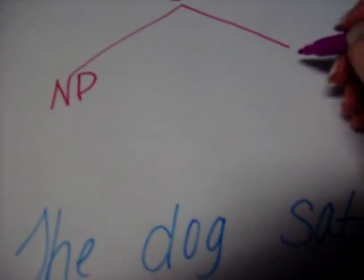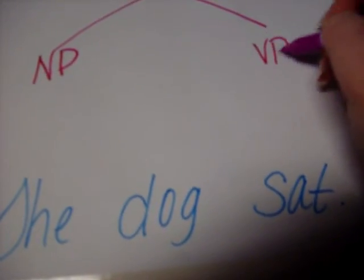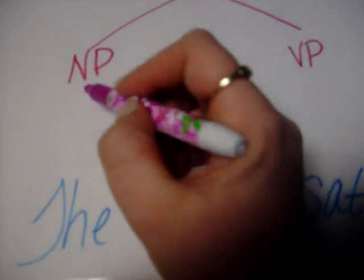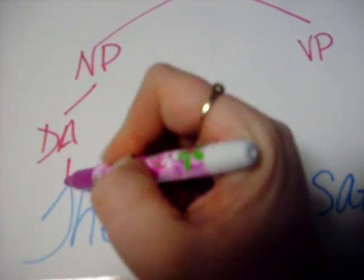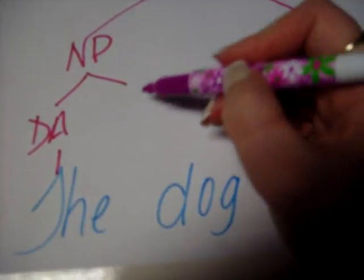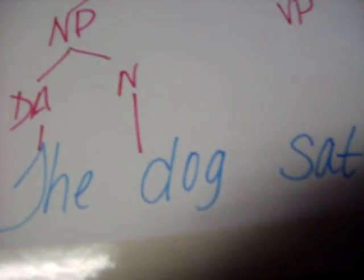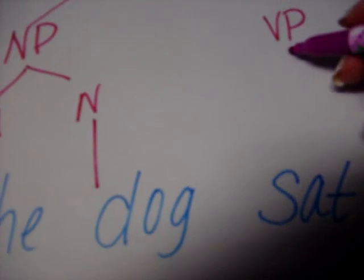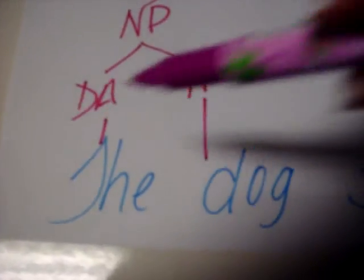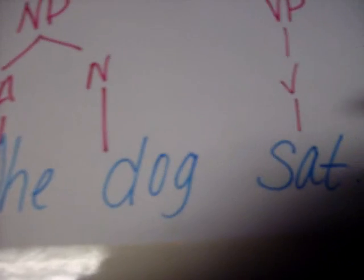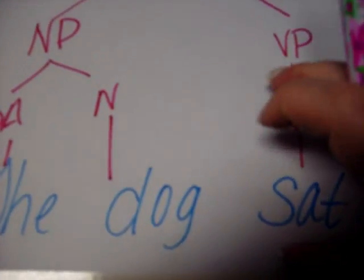We have the two parts: the noun phrase and the verb phrase. In the noun phrase, we have our definite article 'the' and we have our central noun 'dog.' In our verb phrase, we only have the verb 'sat.' So, the dog sat. Pretty simple.